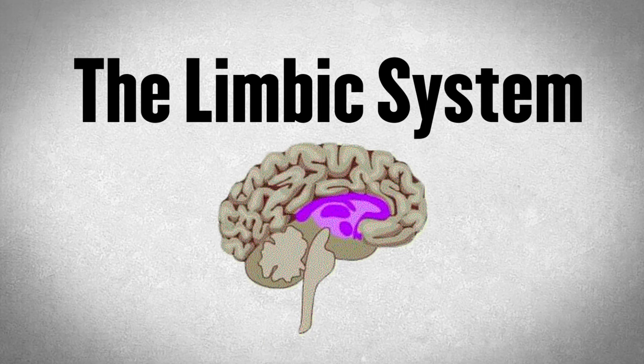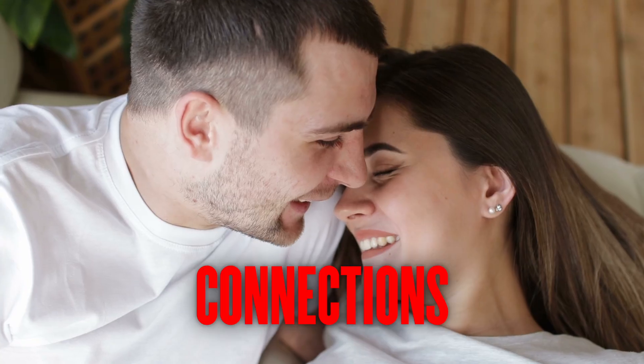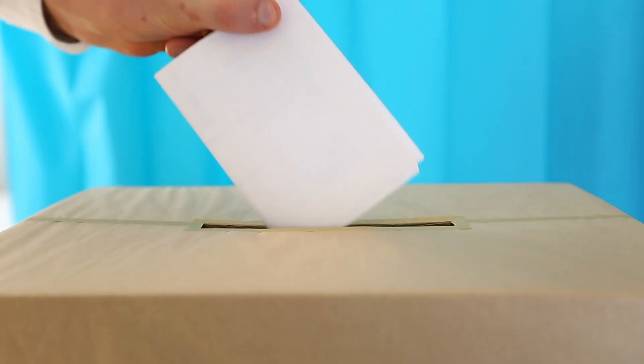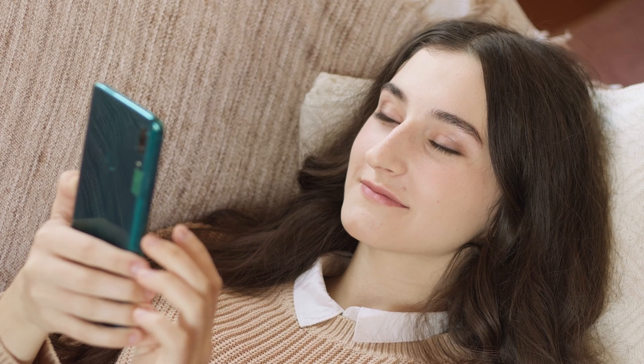Then we move on to the limbic system, our emotional powerhouse. This brain helps us form connections, feel empathy, and build relationships. It also helps us decide who we vote for and if you're an Android user or an Apple user.